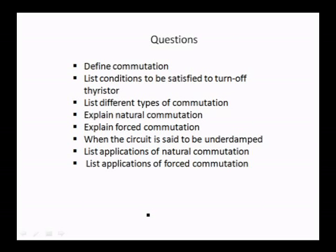The review questions are: define commutation; list the conditions to be satisfied to turn off a thyristor; list the different types of commutation; explain natural commutation; explain forced commutation; state the underdamped condition; list the applications of natural commutation; list the applications of forced commutation. Commutation is essential for inverters and choppers, otherwise power conditioning is not possible. We have discussed all types of commutation, the definition, types, and conditions. Thank you.